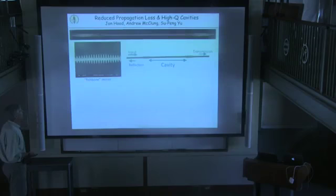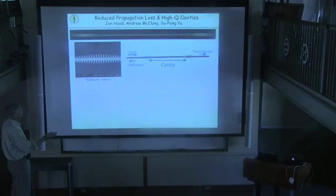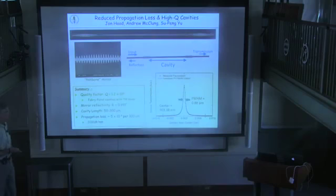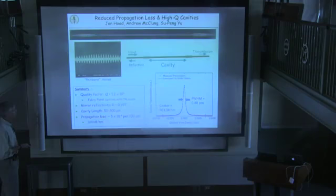We've also been working on cavities. The fishbone cavity is a variant of the alligator that makes a reflector, forming a cavity with a single nanobeam. Measuring transmission and reflection gives very narrow lines. Taking the ratio gives the cavity Q — we measure quality factors of about a million. That means propagation loss — a few parts in 10^-4 per 100 microns, the length of our alligators — is just not going to be part of the problem in these experiments.